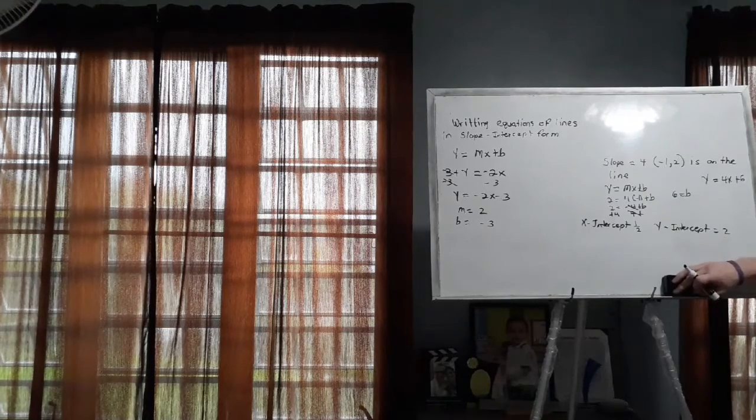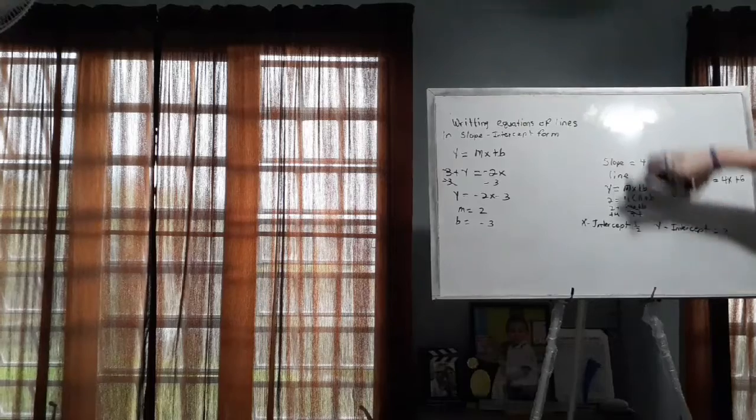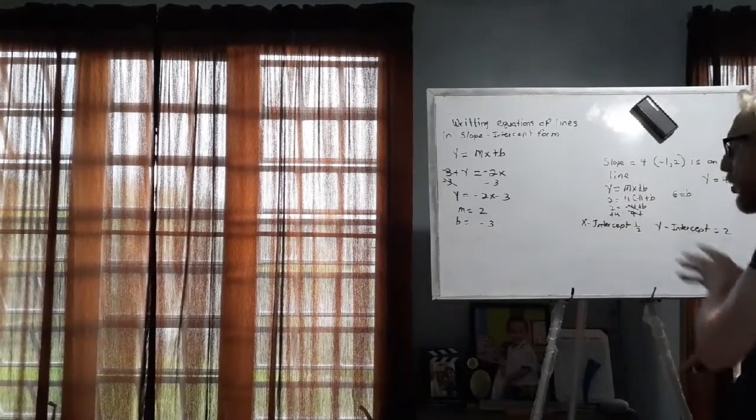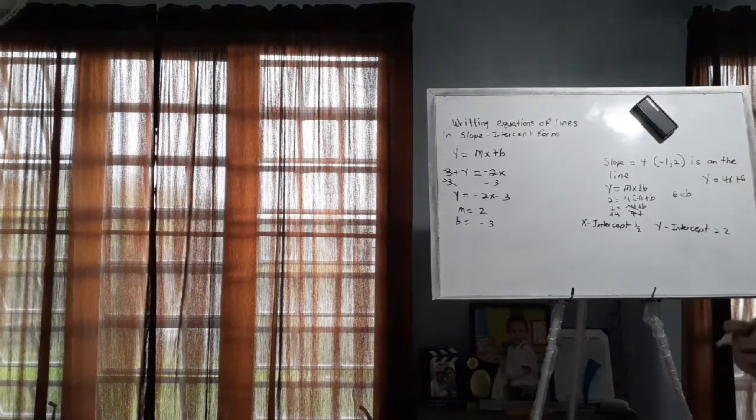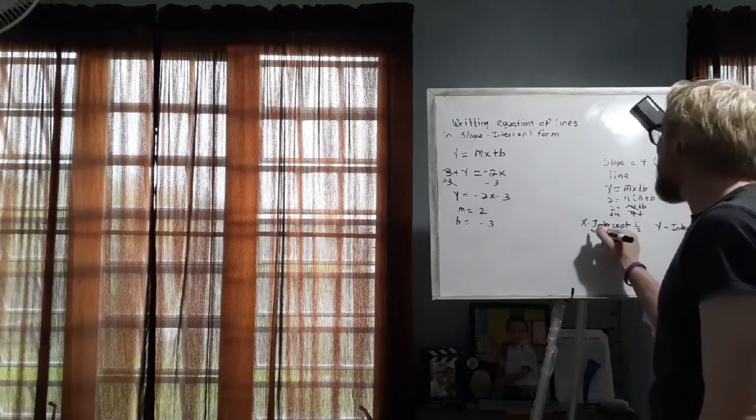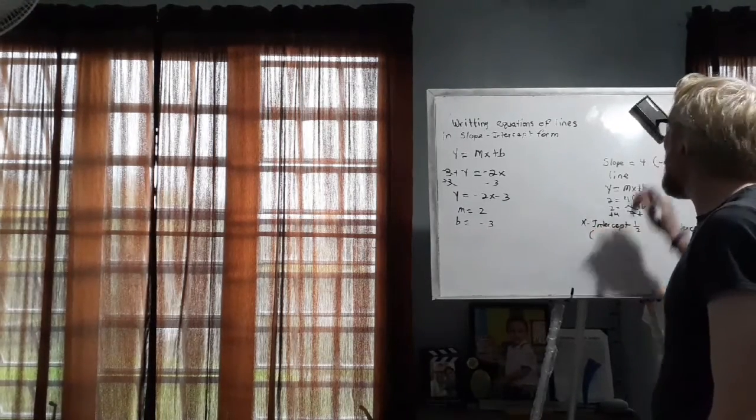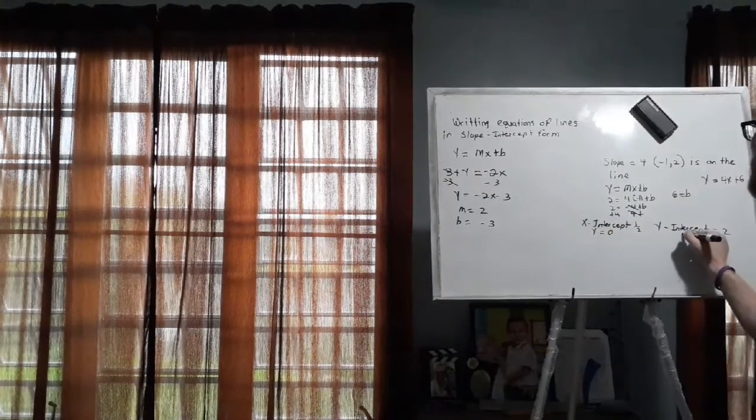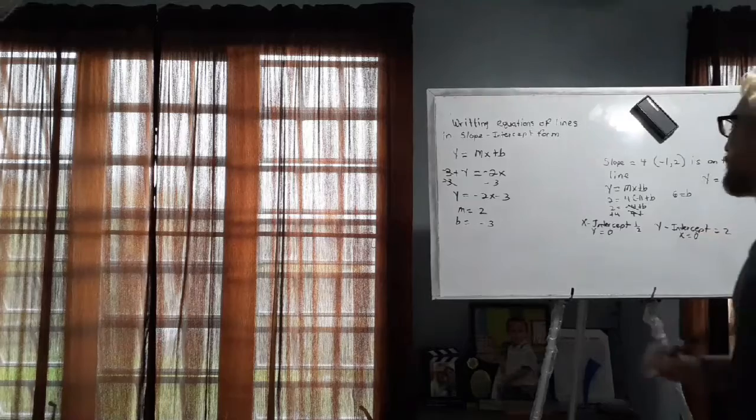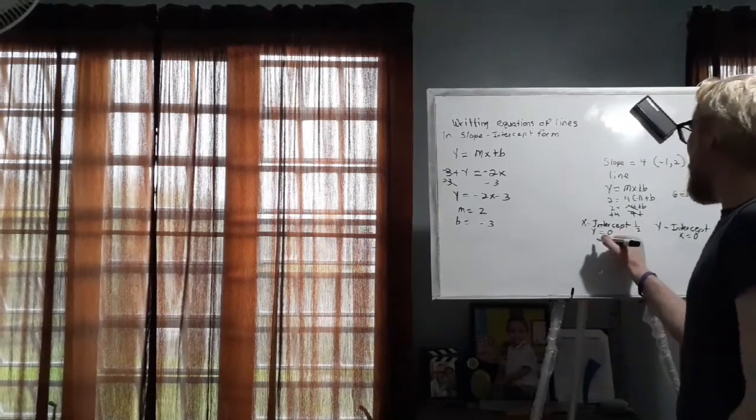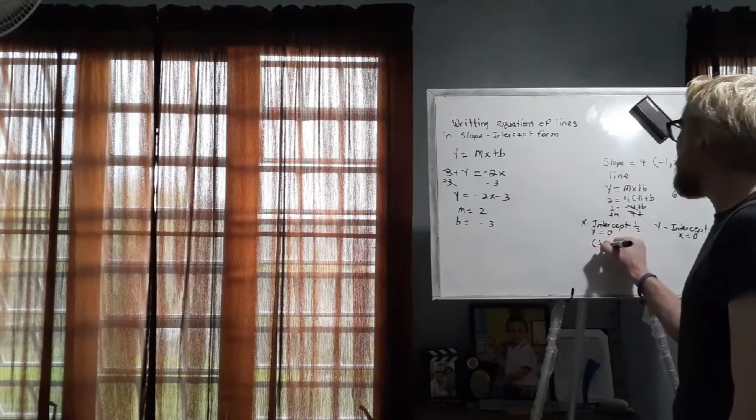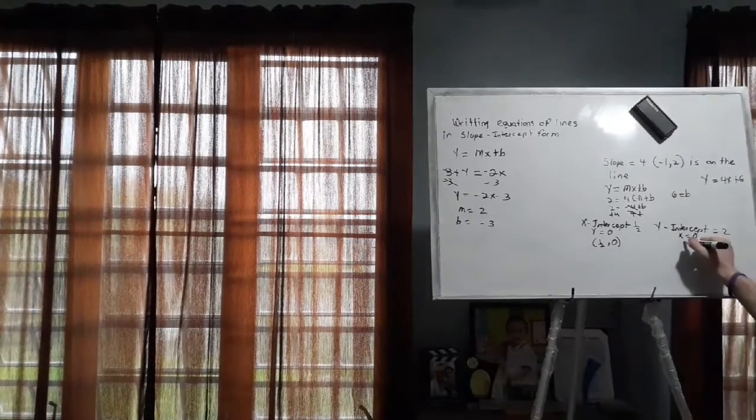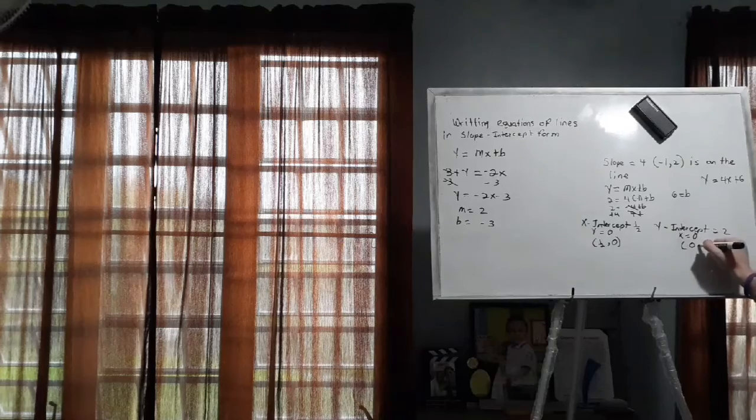Our last one is really easy as well. And here you don't really have an ordered pair or you don't have an equation. All you have is the x-intercept and the y-intercept. Now, something very important. Whenever you have an x-intercept, that means that y equals 0. And whenever you have a y-intercept, x equals 0. So technically you have an ordered pair here. Our ordered pair is 1 half and 0 because y equals 0. And here we have 0 and 2.